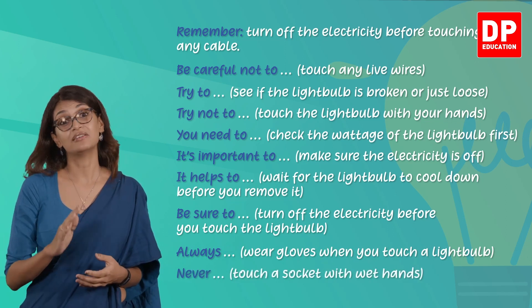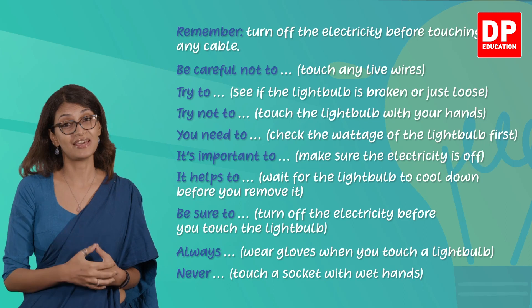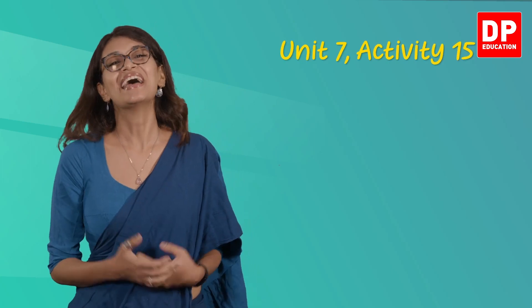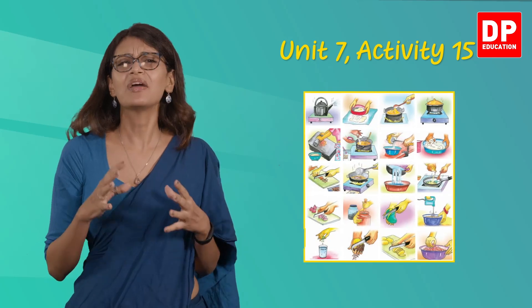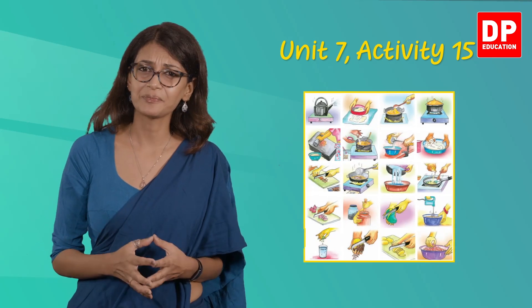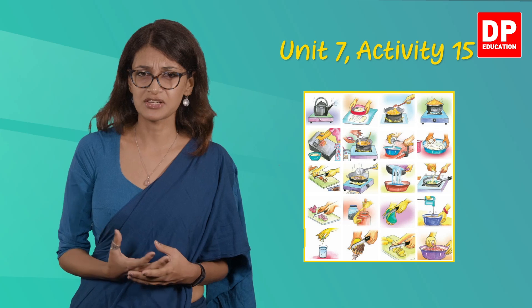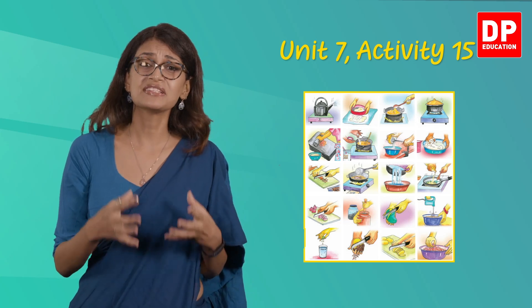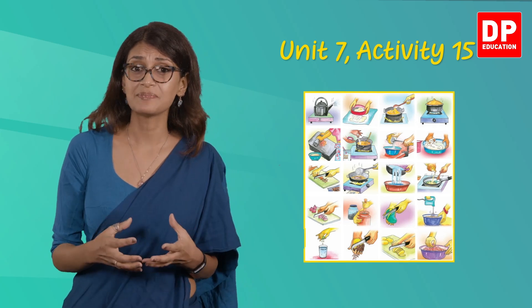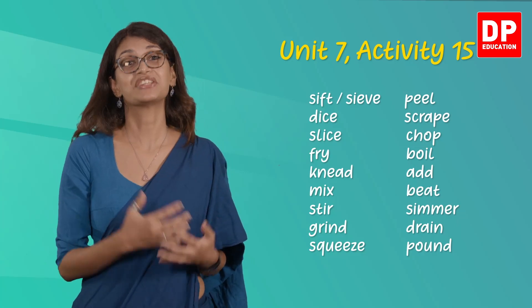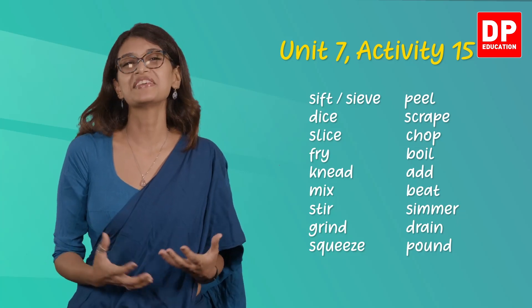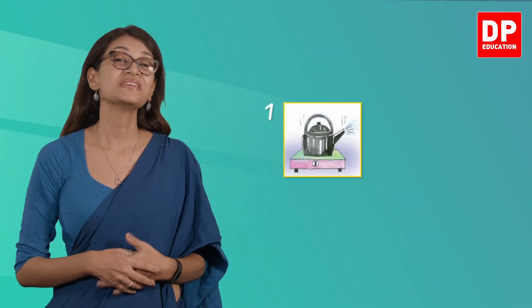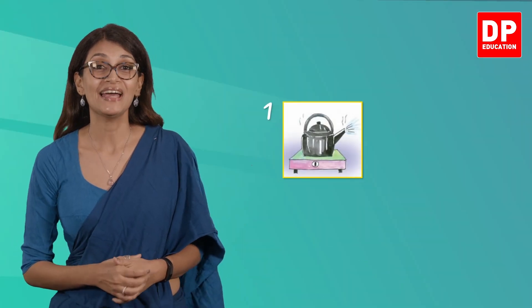Now turn to page 87 in your pupils' book, Unit 7, Activity 15. You would notice that there are quite a few actions and they all revolve around cooking. Before writing out instructions, let's first figure out the different actions or verbs. There is a list of words on page 86 that you can use to figure out what these pictures are. Let's look at picture number one — a kettle is on the stove.